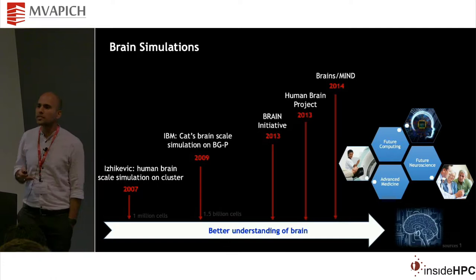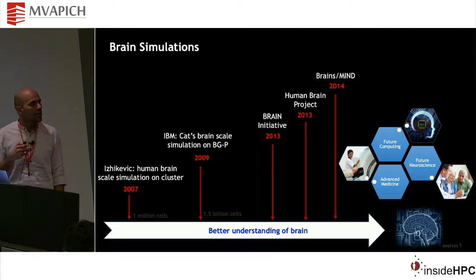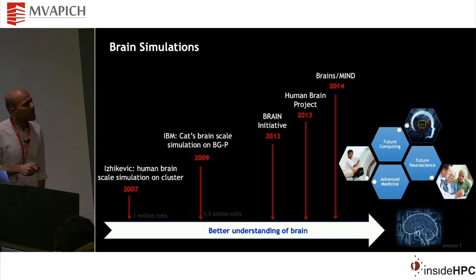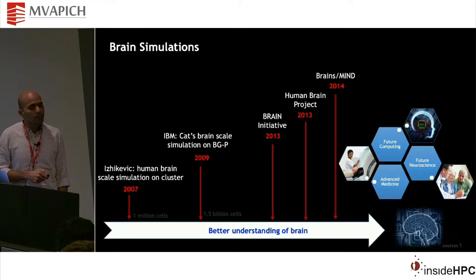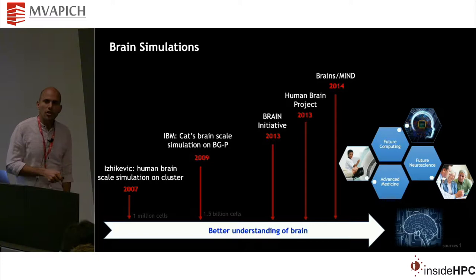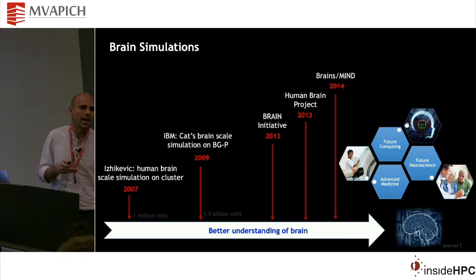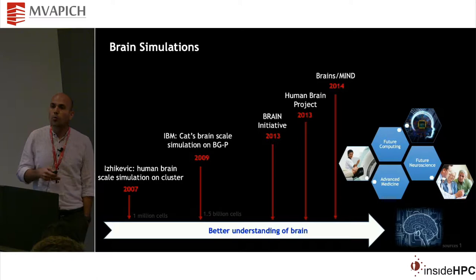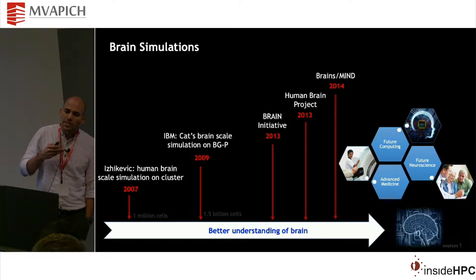The brain is the most complex organ in the human body, and there is a lot of research and large projects — a brain initiative in the US, a human brain project in Europe, and similar projects in Japan and China — all putting efforts into understanding how the brain works. People have been talking about simulating millions and billions of neurons over the last decade or two, all to understand how the brain fundamentally works.